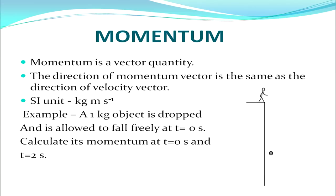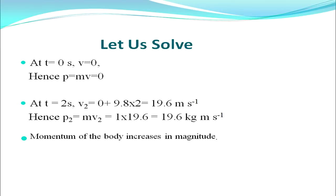For example, a 1 kg object is dropped and allowed to fall freely at t = 0 seconds. Calculate its momentum at t = 0 seconds and t = 2 seconds. Let us solve this numerical. At t = 0 seconds, v = 0, that is velocity equals zero. Hence, the momentum p = mass × velocity = 0.